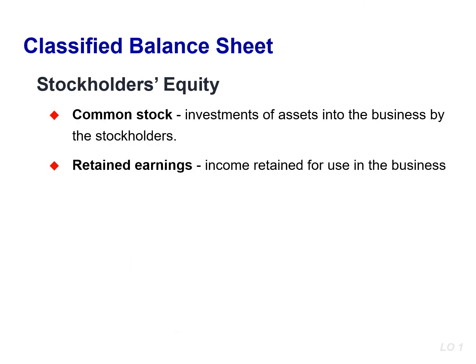We will discuss stockholders' equity in more detail later in the semester. For now, stockholders' equity will consist of two accounts: common stock and retained earnings. Companies record as common stock the investment of assets into the business by the stockholders. They record as retained earnings the income that has been retained for use in the business. These two parts combined make up the stockholders' equity section on the balance sheet.